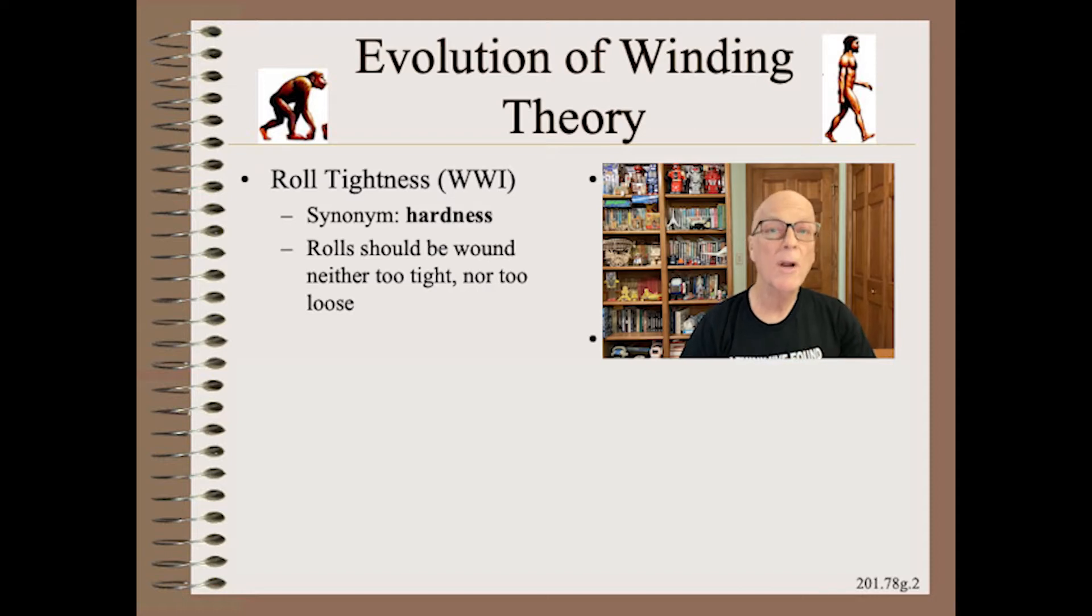Winding machines have been around for more than a century and our understanding of them has steadily improved. The first useful understanding was learned around World War I - that is, rolls should be wound neither too tight nor too loose. The paper industry used the metric and word hardness as a synonym for tightness. While much has been learned in the century since, including about two dozen PhD theses in winding, none of what we have learned has changed the correctness and utility of this fundamental guideline.